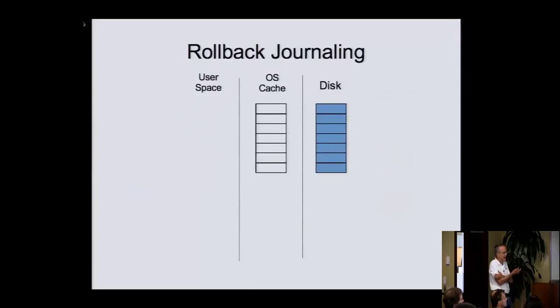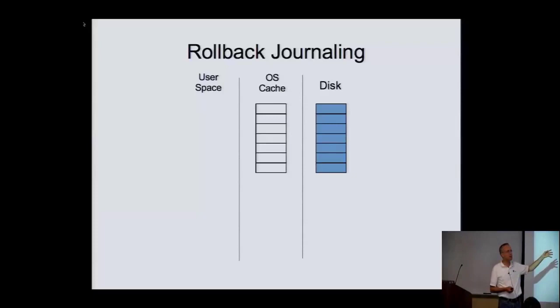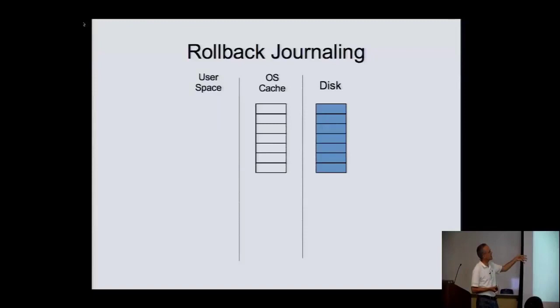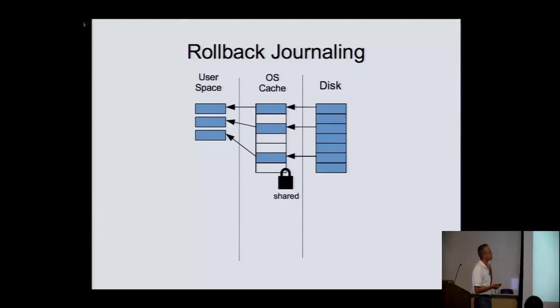When you start out reading the database, all the data is on disk. There's an OS cache but it's empty — the cache is cold. The first thing you do is get a shared lock, which prevents other processes from changing the data out from under you while you're reading it. Then you read the few pages you need in order to do your work.